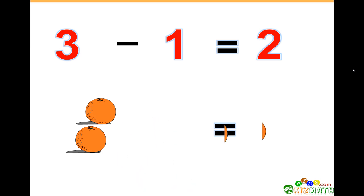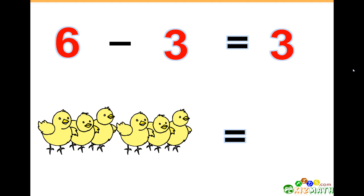one orange, we only have two oranges left. 6 minus 3 equals 3. We have six birds. If we take